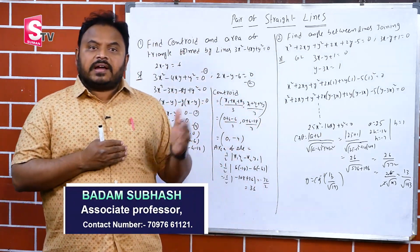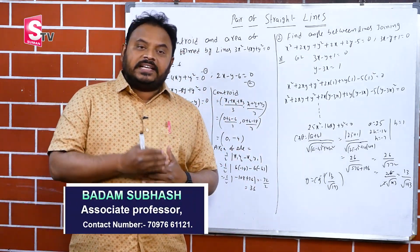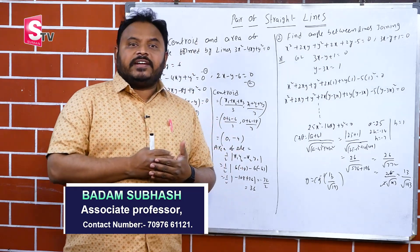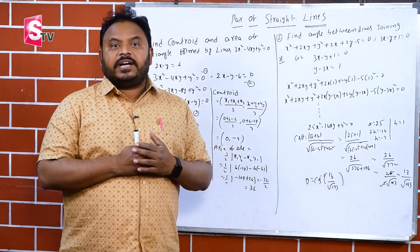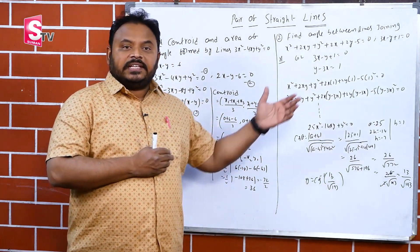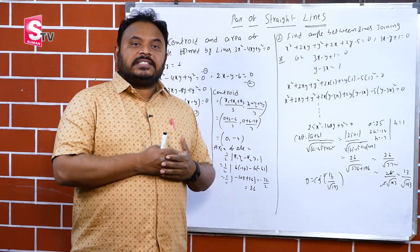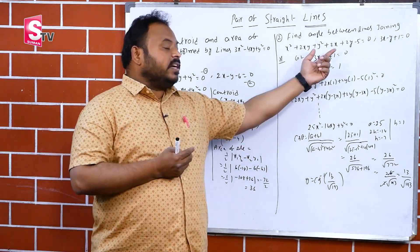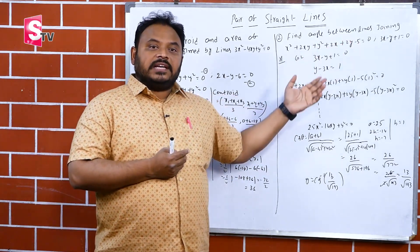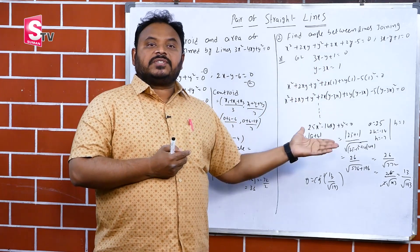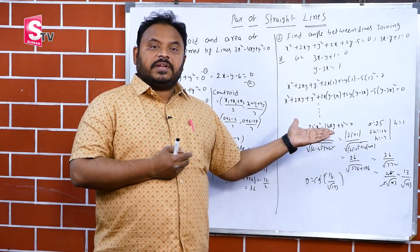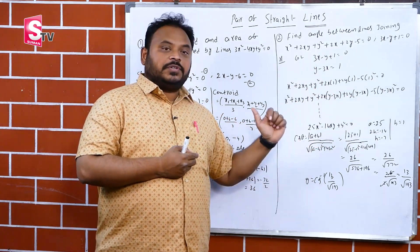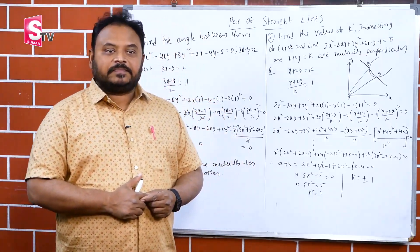When we get a line and after homogenization the equation becomes ax²+2hxy+by²=0 format, we can find the angle between the lines using the cos θ formula. Thank you very much.